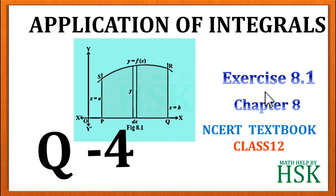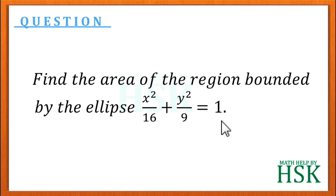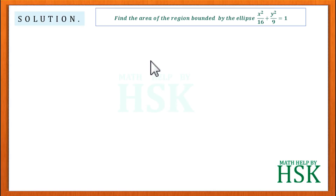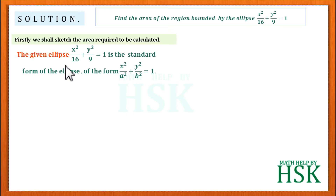Question number four of exercise 8.1 from the chapter Application of Integrals. The question is: find the area of the region bounded by the ellipse x² upon 16 plus y² upon 9 is equal to 1. To solve this question, we shall first sketch the area required to be calculated.